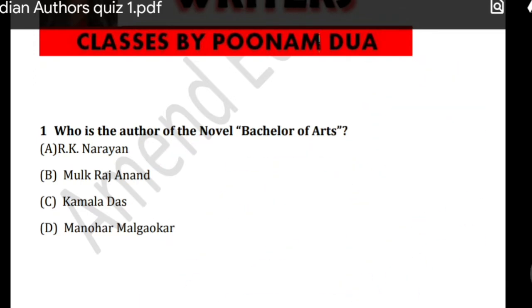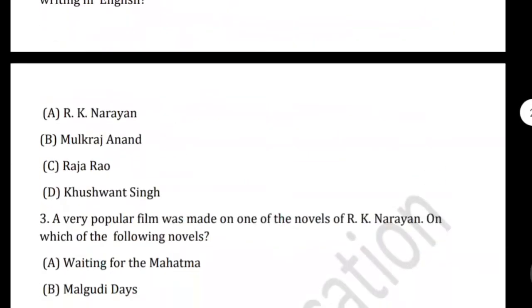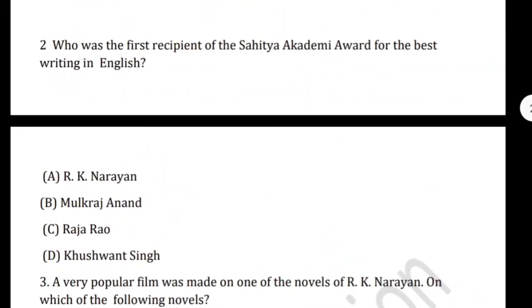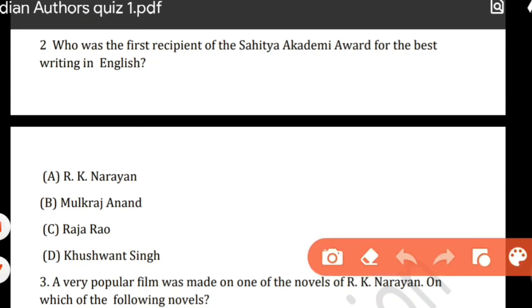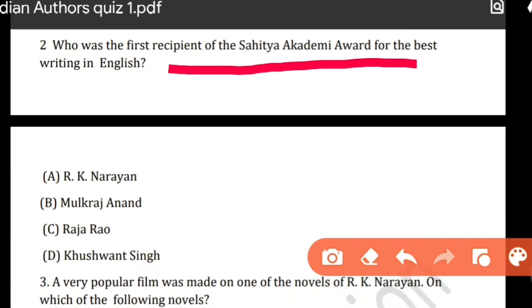The next question is related to the Sahitya Akademi Award. Who was the first recipient of the Sahitya Akademi Award for writing in English? The correct answer again is R.K. Narayan. This award was given for 'The Guide' in 1960.